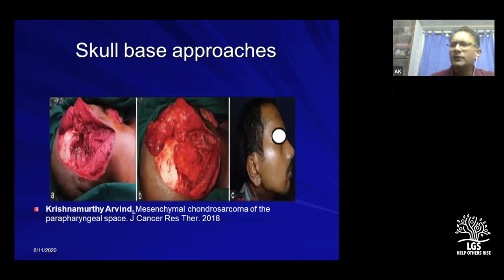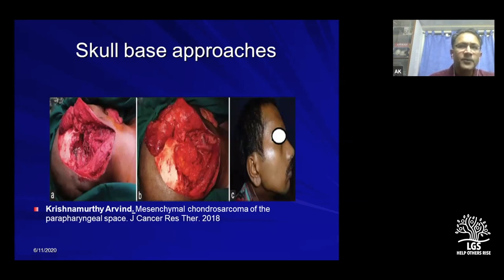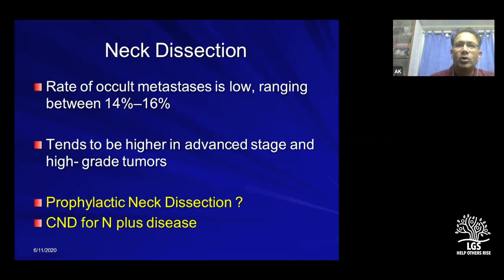Skull base approaches are also used in selected cases — for example, a patient with a parapharyngeal space chondrosarcoma underwent skull base resection. Extended resections are particularly relevant for adenoid cystic carcinomas, which have a predilection for perineural spread; in very selected cohorts, chasing the nerve with extended resection is appropriate.